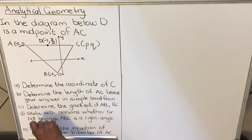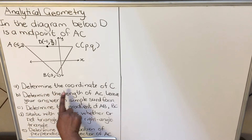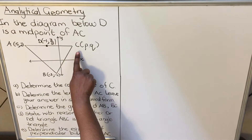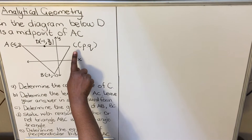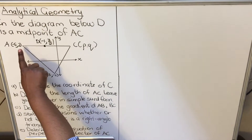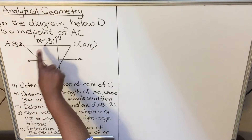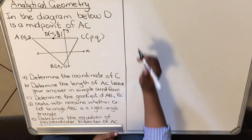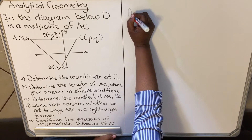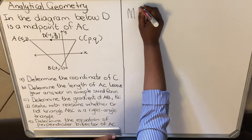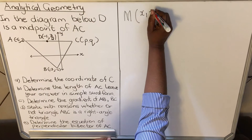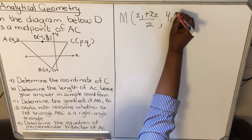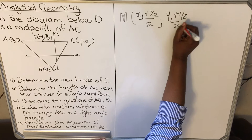We're going to look at number A — determine the coordinate of C. C is one endpoint, the line is AC, and D is the midpoint. The formula for the midpoint is: midpoint = (x1 + x2)/2, (y1 + y2)/2.